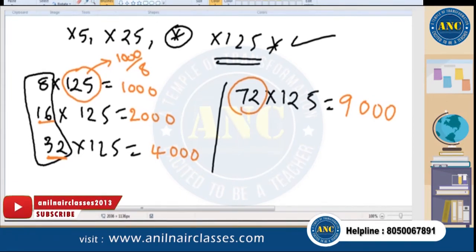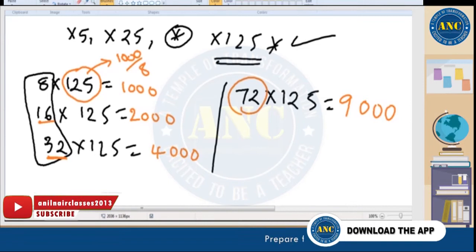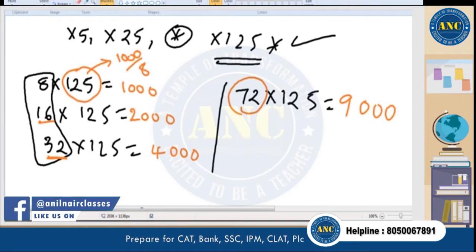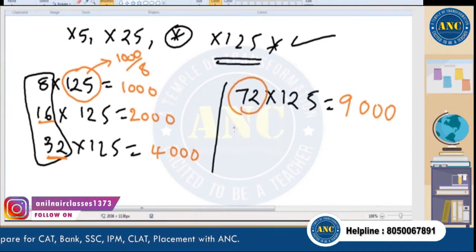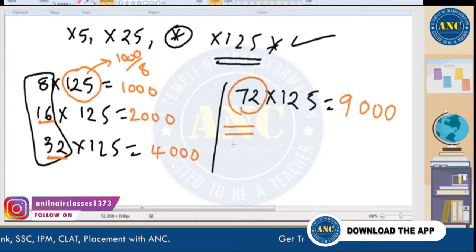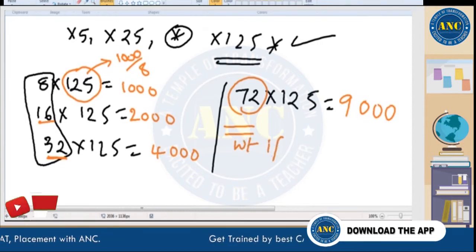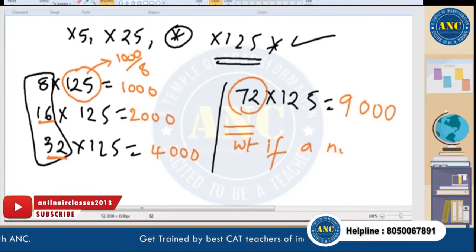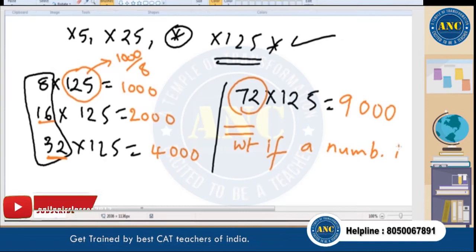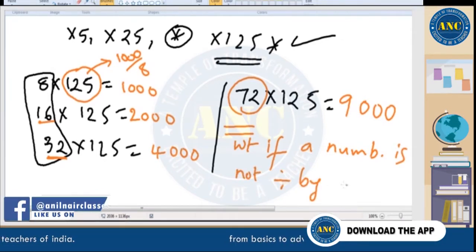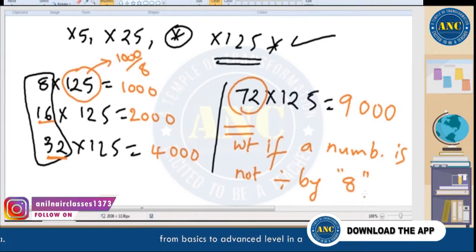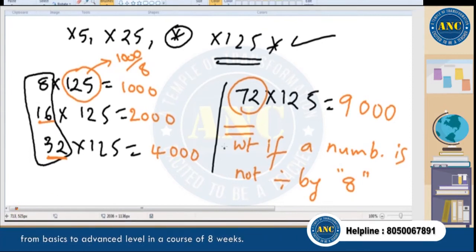The answers are 2000, 4000, 9000. Now you may raise the question: what if a number is not divisible by 8? For that we have to work for a few minutes, but we can definitely get the answer.